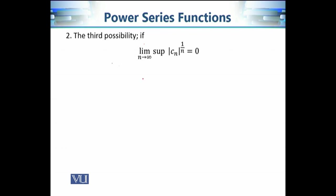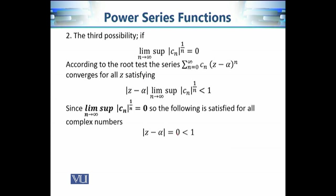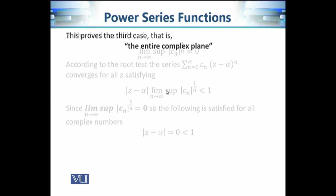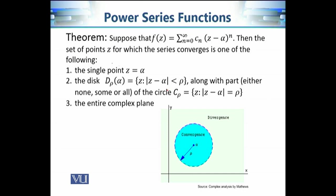Now let's discuss the third possibility: if the limsup equals 0. In this case the expression is always equal to 0, and 0 is always less than 1. So whatever complex number Z you take, the expression is going to be less than 1. This implies that for every complex number Z the series is convergent. Therefore, the third scenario is that the series converges for each and every complex number in the entire complex plane.